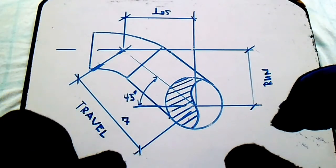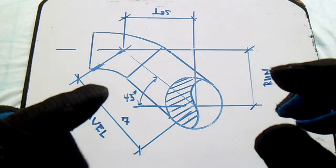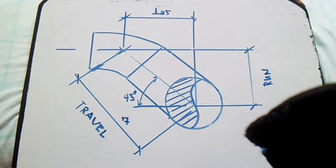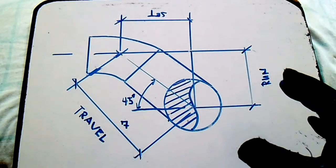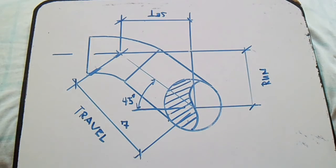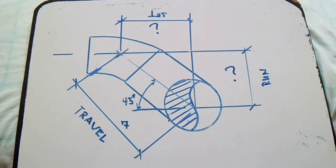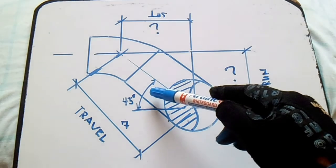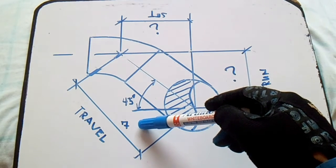Hi guys, welcome back to Piping Welding and NDT channel. Click here to play more videos regarding piping, welding, and NDT. This video is the answer to my previous question: find the set, find the run, and how many fittings — given angle 45 degrees and travel of 7.